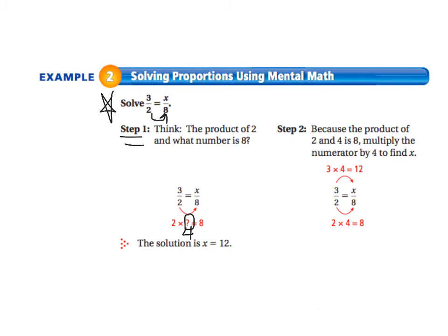And then step two, because we multiplied the bottom of the fraction by 4 to get to our 8, we have to multiply the top of our fraction by 4 as well. So 3 times 4 equals 12. So since our top number here is now 12, because 3 times 4 equals 12, that means that x equals 12. So that is our solution to this proportion.